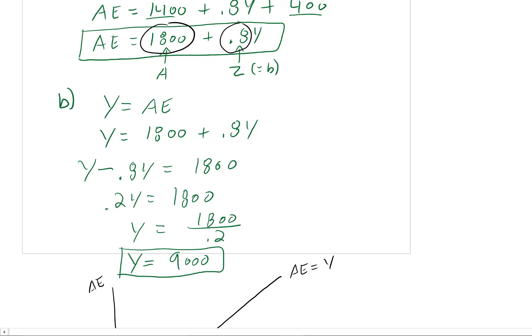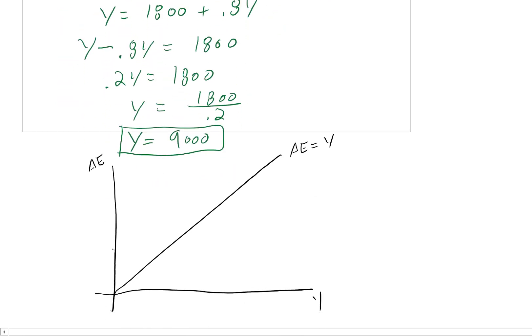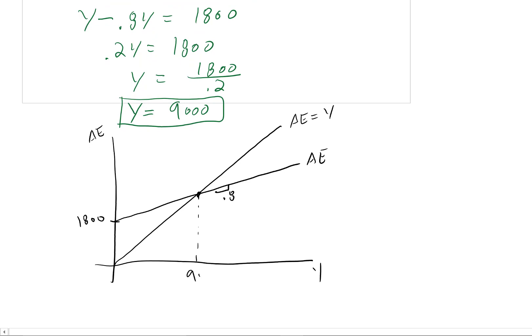So that's 1800. And the slope, or Z, is 0.8. So what this is saying is that the intercept is 1800 and the slope is 0.8. And that's what our AE function is. So if you're ever asked to graphically represent this, this is how you do it. We know where those two lines cross. We just figured out that that's 9,000. So we can put 9,000 there. So this is what it looks like in a graph. We just solved it algebraically.